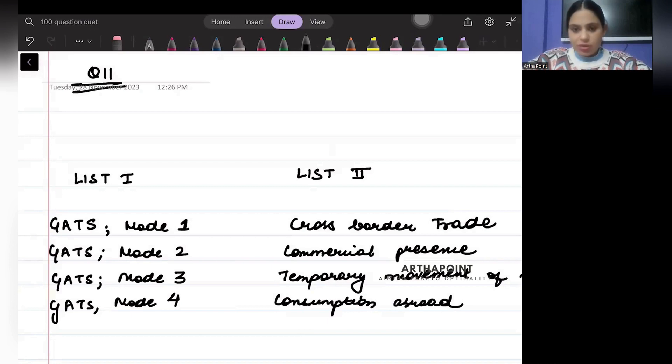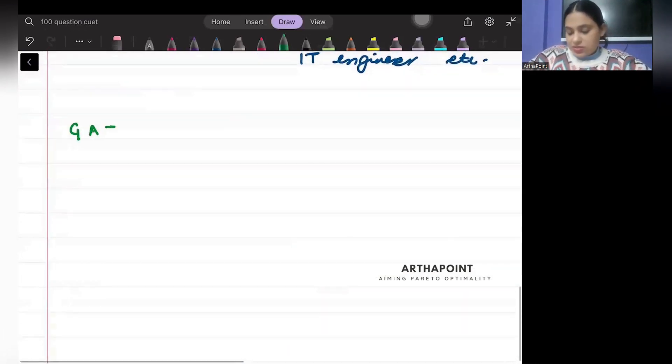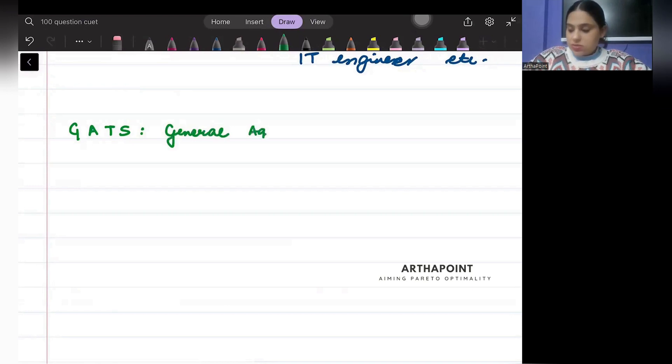This is a question from international economics, a very different theoretical question that I wanted to discuss with you. This question is on GATS and the different modes of GATS. When we talk about GATS, what is GATS? GATS is basically the General Agreement on Trade in Services of the World Trade Organization.